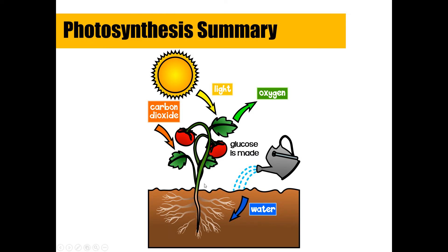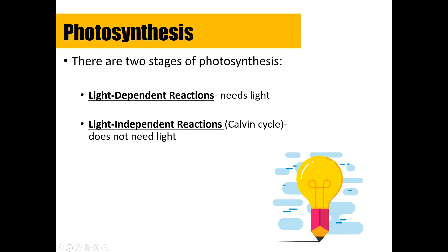Now we get into the part that might be new to you. There are two stages of photosynthesis. Stage one is the light-dependent reactions — this part of the process needs light to happen, which is why it's called the light-dependent reaction. Stage two is the light-independent reactions, also called the Calvin Cycle. This stage doesn't necessarily need light — it takes what was created in stage one and mixes it with other molecules to produce the final products.